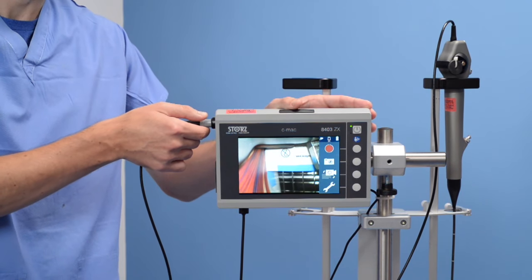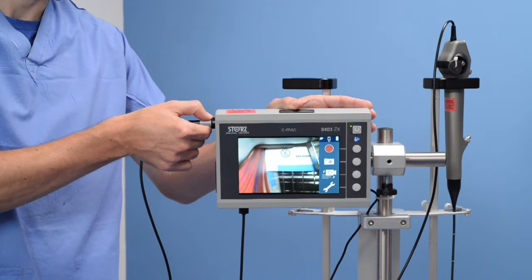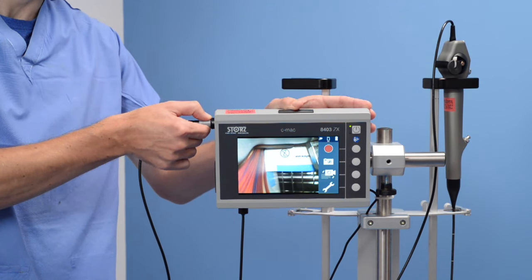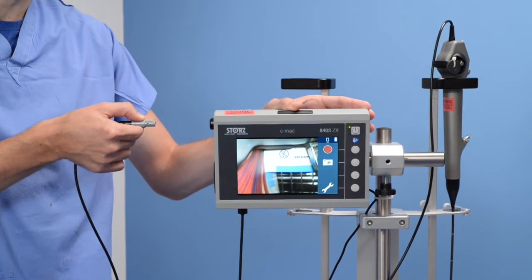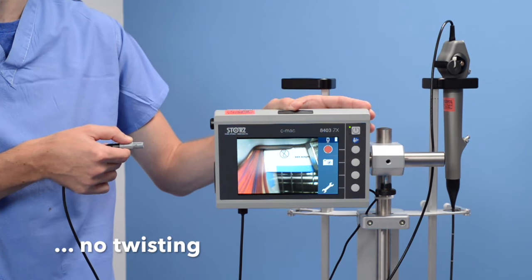To remove the connector, gently hold the grey collar on it and pull straight back. It will just gently slide out. Again, no twist.